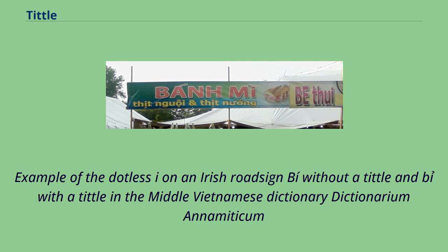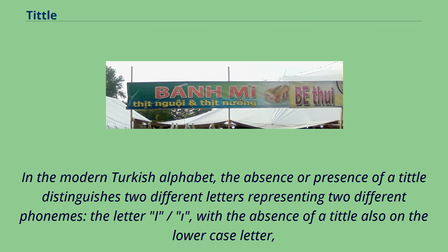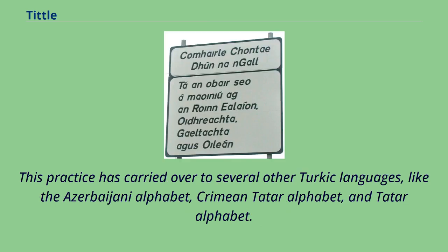An example of the dotless i can be seen on an Irish road sign, where 'be' appears without a tittle and 'by' appears with a tittle. In Lithuanian and Vietnamese, a number of alphabets use dotted and dotless i both in upper and lowercase. In the modern Turkish alphabet, the absence or presence of a tittle distinguishes two different letters representing two different phonemes. The letter without a tittle represents the close back unrounded vowel, while the letter with a tittle, even on the capital, represents the close front unrounded vowel.